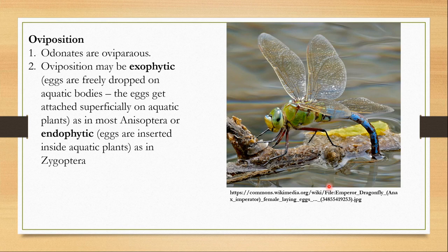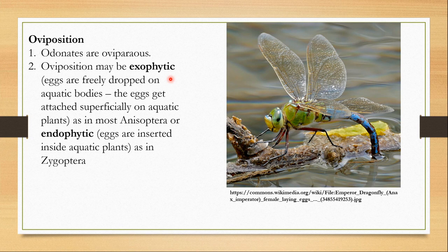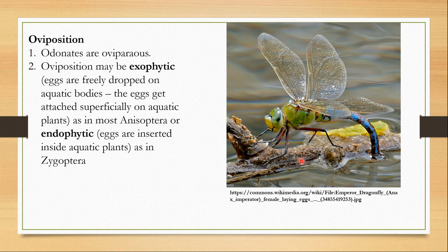Odonates are oviparous — they lay eggs. Oviposition may be exophytic or endophytic. Exophytic means eggs are deposited on some aquatic plants but not inserted inside plant tissue. In case of dragonflies, eggs are freely dropped into aquatic bodies — a dragonfly simply drops eggs into the water where they float and attach to aquatic plants.